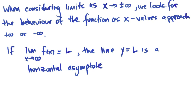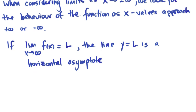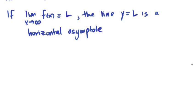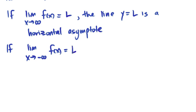So if you approach positive infinity and your graph reaches a numerical value l, you will have a line that you are approaching — a horizontal asymptote. The same thing happens if you have a line that you're approaching for a limit as x approaches negative infinity.